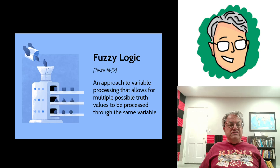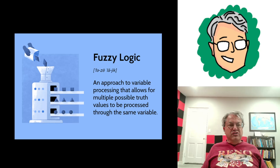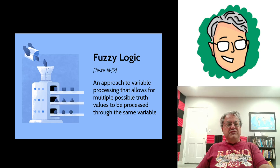But fuzzy logic — it's not so black and white. You can have shades of gray in between. The truth value of any statement, any sentence, can have an arbitrary real value between zero and one. It doesn't have to be zero or one. It could be a half, a third — anything between zero and one. So that's what fuzzy logic is.